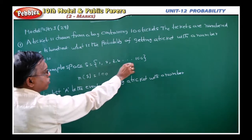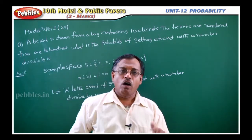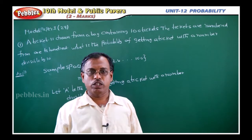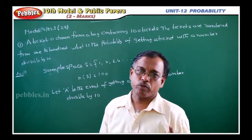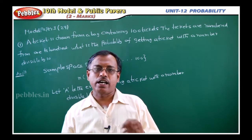In this set, what are the numbers which are divisible by 10? All multiples of 10 will come, that is 10, 20, 30, 40, 50, 60, 70, 80, 90, 100.